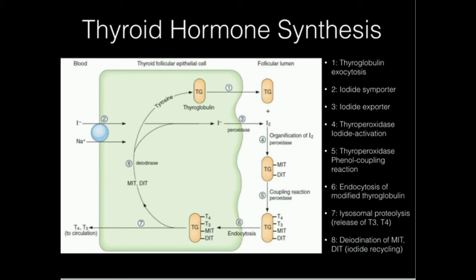The iodide is activated by thyroperoxidase (enzyme 4) to the hypoiodite group — that's the activated iodine — and it's attached to tyrosine residues on thyroglobulin. If a tyrosine residue has one iodide, it's termed monoiodotyrosine (MIT), and if it has two iodides, it's called diiodotyrosine (DIT).